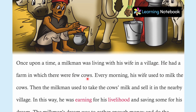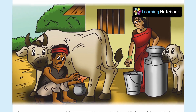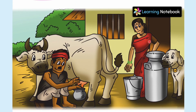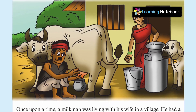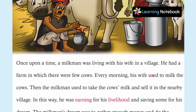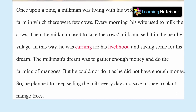As you can see here, this is a milkman, this is a cow's milk, and this is his wife. Every morning, his wife used to milk the cows, then the milkman used to take the cow's milk and sell it in the nearby village. In this way, he was earning for his livelihood and saving some for his dream.